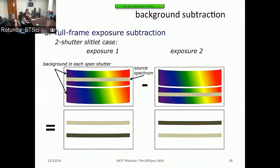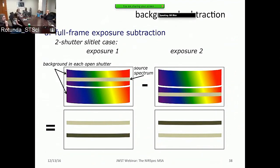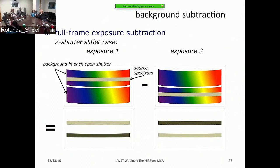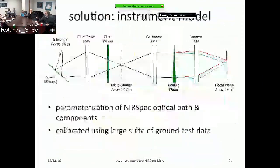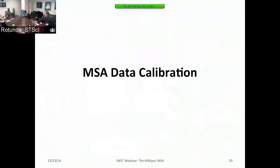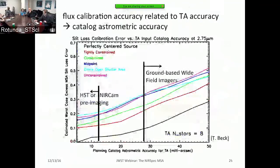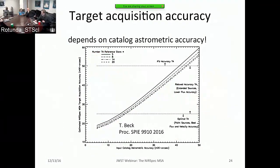The performance of target acquisition does not vary dramatically between 5 and 20 reference stars. A study by Tracy Beck shows the solid line for 5 reference stars and the long dashed line for 20 reference stars — it turns out the range of performance is actually not that large.